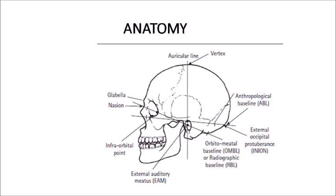Next is the anthropological baseline. There is also the external occipital protuberance or inion, and the vertex point, which is the superiormost point of the skull. The line joining the external auditory meatus and the vertex is called the auricular line. Other landmarks include the glabella and nasion, which are prominent points in the facial and nasal region. Please note: the auricular line joins the vertex and external auditory meatus, while the orbitomeatal baseline joins the orbit and external auditory meatus.